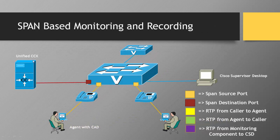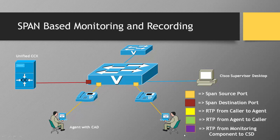Cisco Unified CCX provides two different mechanisms to monitor and record agent calls. We have a small topology here where we have a UCCX and Cisco voice switches. We have IP phones and two agents connected behind those phones using the PC port on the phones, and the Cisco supervisor desktop connected to the switch. You can see the legends here — we will be seeing some animations to better understand how packet flows happen when we monitor or record in the UCCX environment. The light orange boxes are the span source ports.